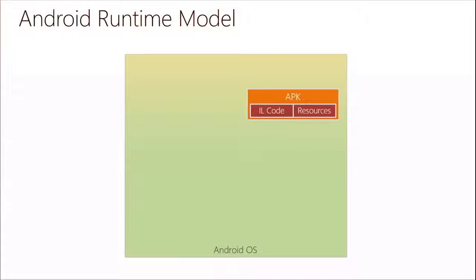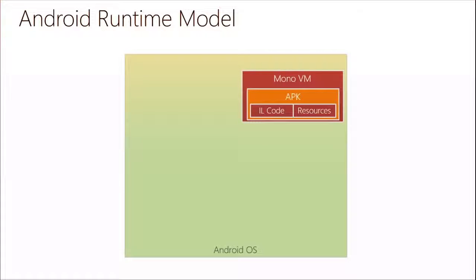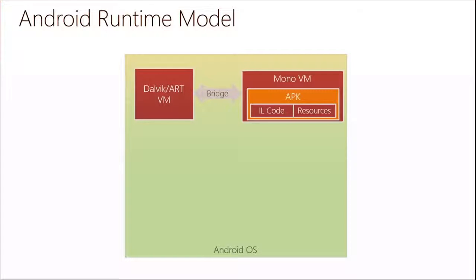Because Apple restricts the App Store to only binary-based applications, you have to compile down to native code on iOS. On Android, it's a bit more open, so you can submit IL code and do the compiling on the fly. The Android runtime model works like this: you have your Android OS and your APK which includes your IL code and resources, and then wrapped around that is the Mono VM. The VM interprets your code and acts as a bridge to the Dalvik or ART virtual machine — depending on what version of Android you're on — and Mono communicates the interop between the Android VM and your code.